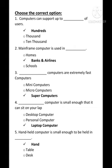Third: blank computers are extremely fast computers. The options are mini computers, microcomputers, and supercomputers — the correct one is the third option: supercomputers. Supercomputers are extremely fast computers. Fourth statement: blank computer is small enough that it can sit in your lap. Options are desktop computer, personal computer, or laptop computer — the correct one is laptop computer.